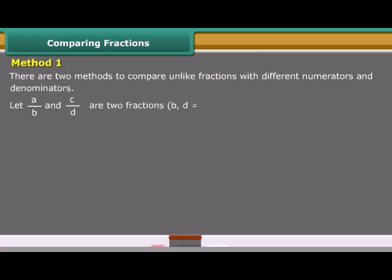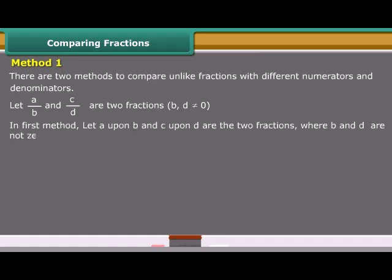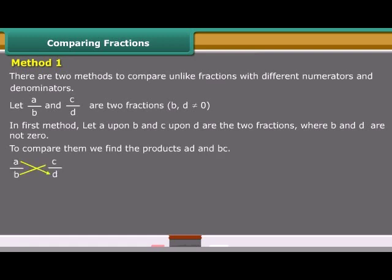Method 1. There are two methods to compare unlike fractions with different numerators and denominators. Let A upon B and C upon D be two fractions where B and D are not equal to 0. In the first method, to compare them, we find the products AD and BC.